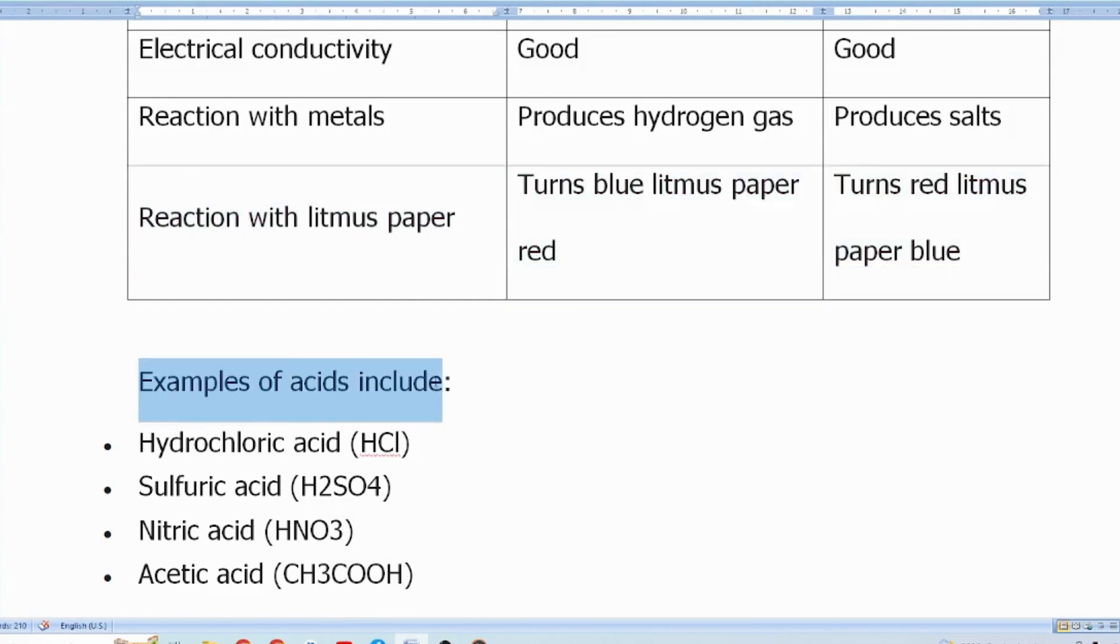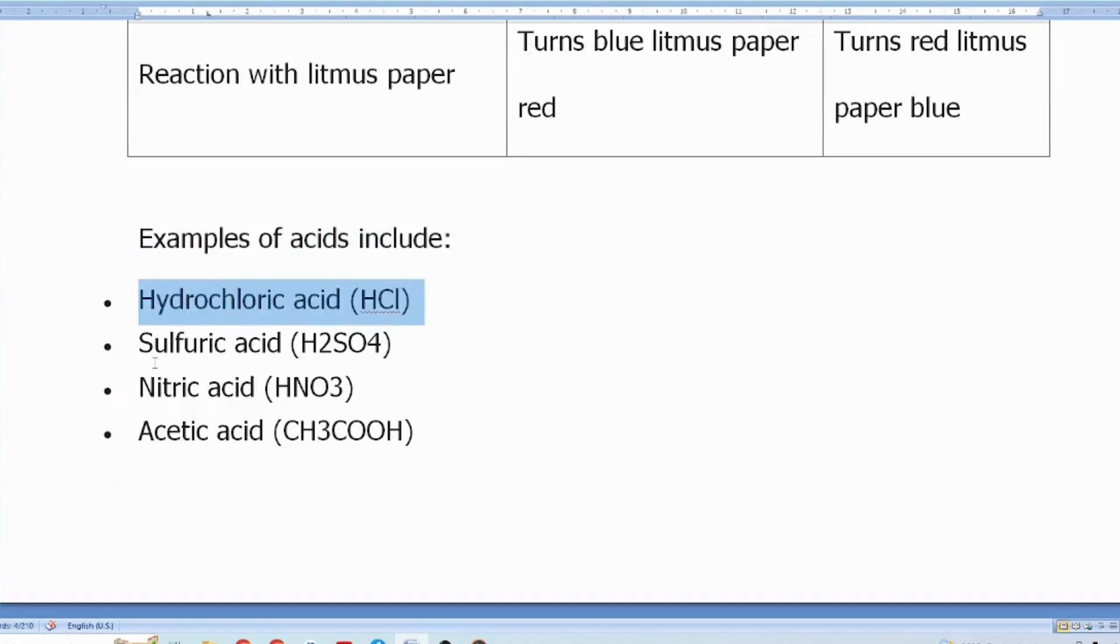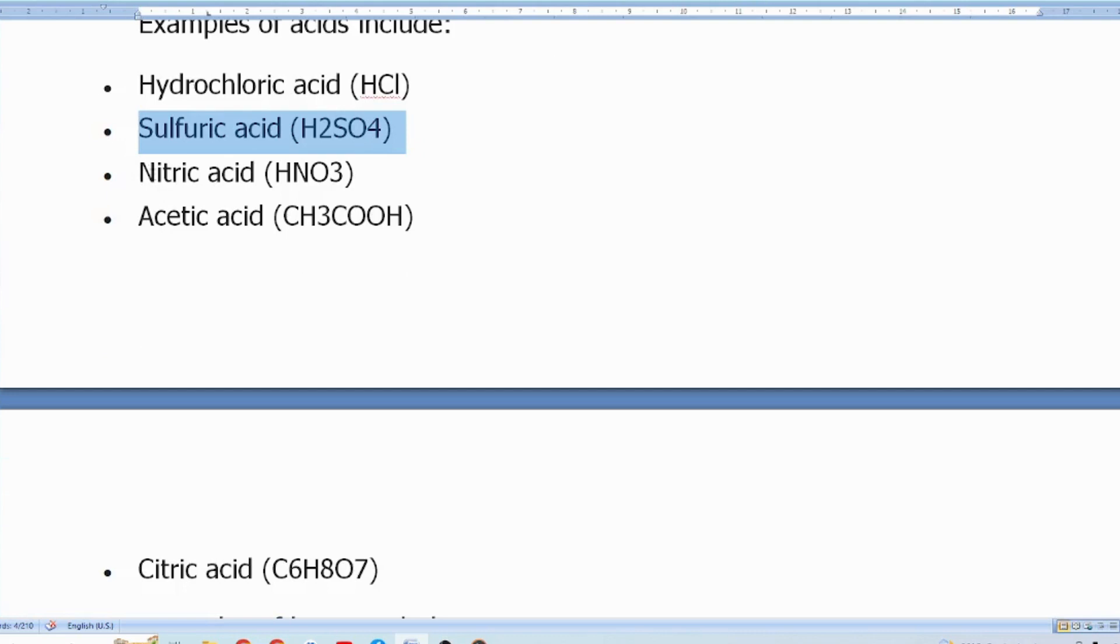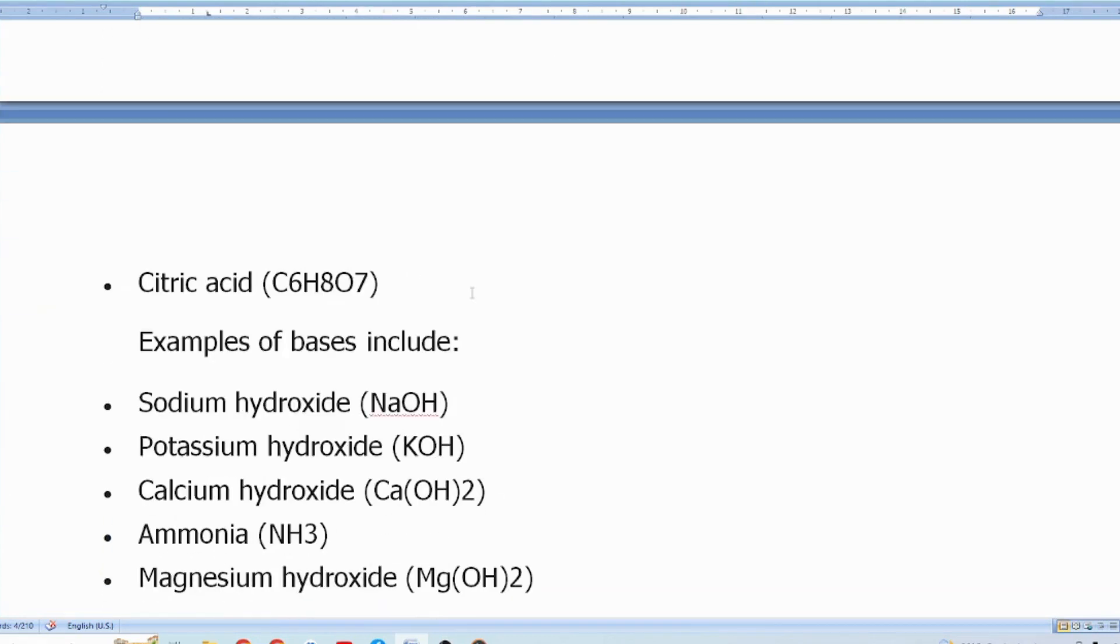Examples of acids include hydrochloric acid HCl, sulfuric acid H2SO4, nitric acid HNO3, acetic acid CH3COOH, citric acid C6H8O7.